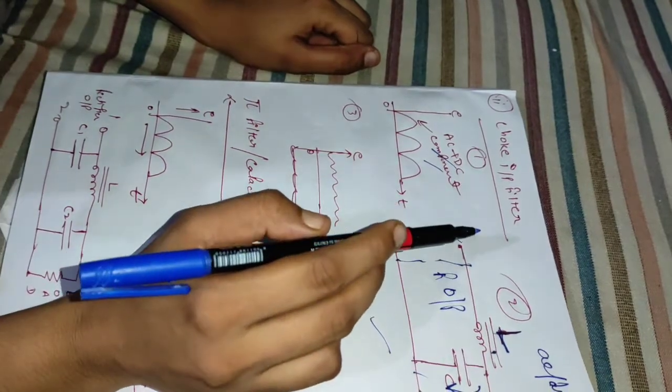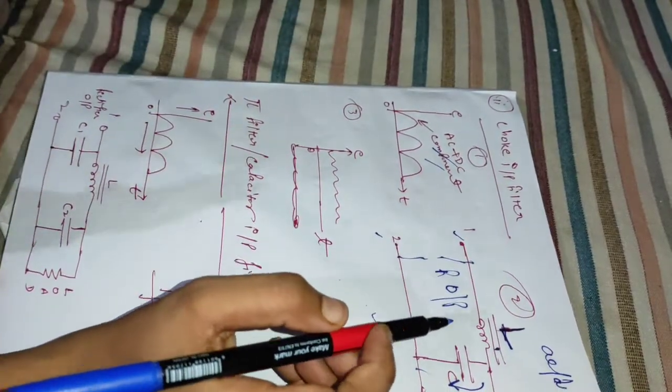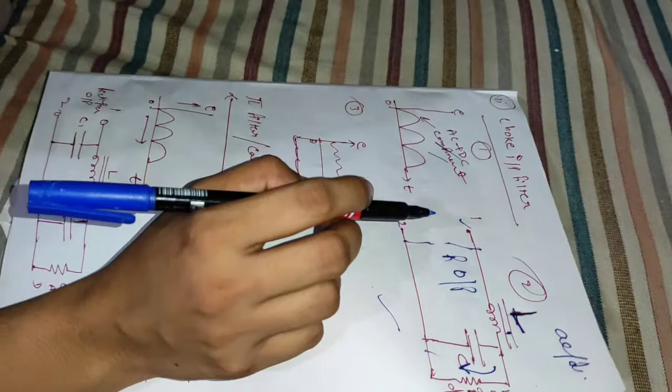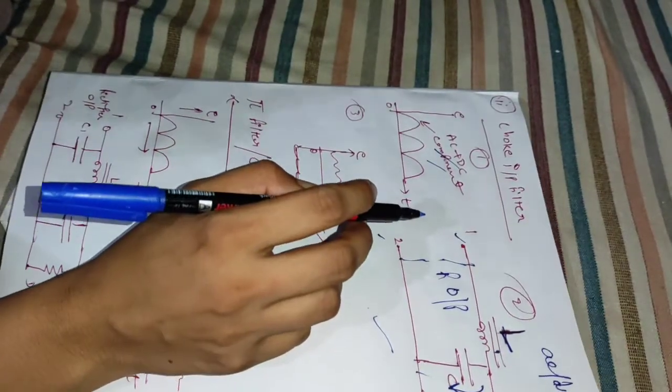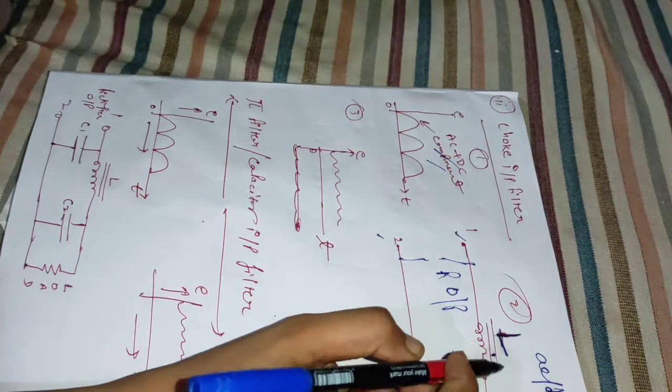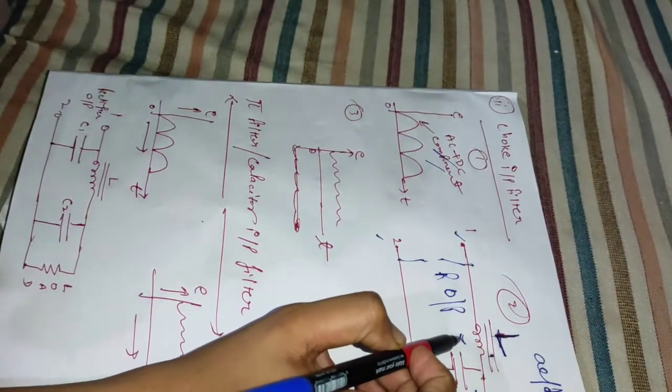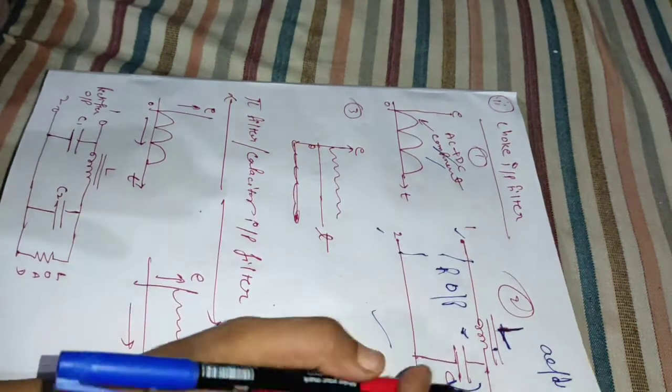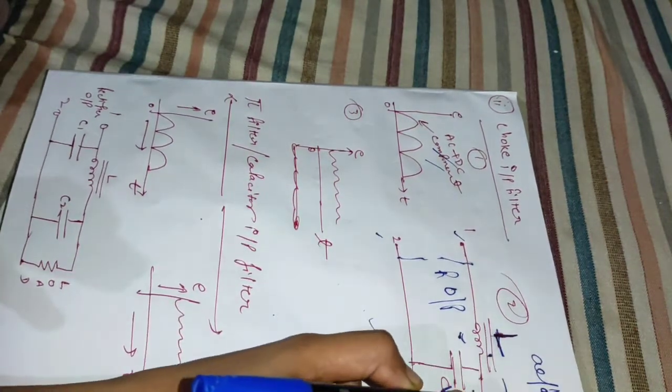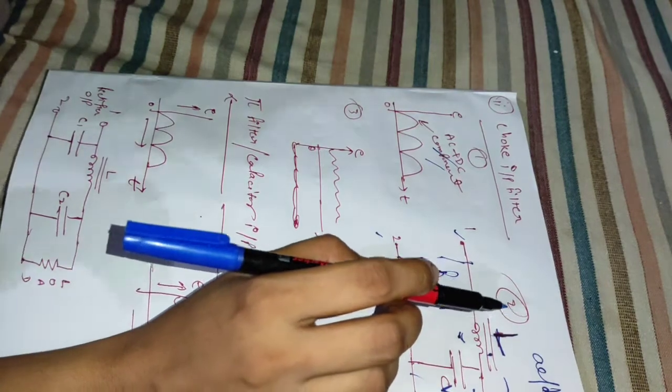But negligible opposition to the DC component. The result is that most of the AC component appears across the choke, while all of the DC component passes through the choke on its way to the load.